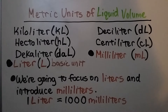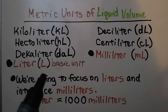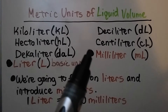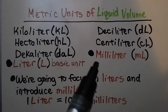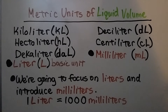For metric units of liquid volume, we have a kiloliter, hectoliter, decaliter, liter (the basic unit, abbreviated with a capital L), deciliter, centiliter, and milliliter, abbreviated as mL. We're going to focus on liters and introduce milliliters. One liter is equal to 1,000 milliliters.